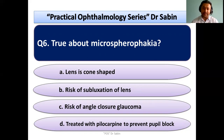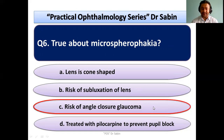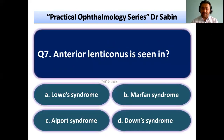True about microspherophakia: one of the options is true and the rest are false. Option A: lens is concave — this is false; lens is spherical. Option B: risk of subluxation of lens — this is false because there will be dislocation of lens. Option C: risk of angle closure glaucoma — yes, it is true. Option D: treated with pilocarpine to prevent pupillary block — this is wrong, because microspherophakia leads to inverse glaucoma that is treated with atropine. So the answer is C.